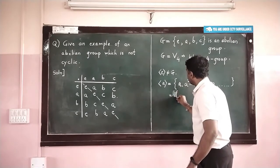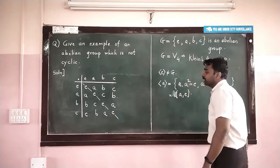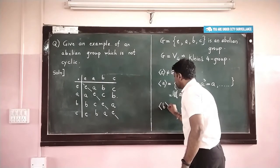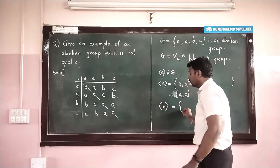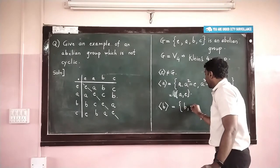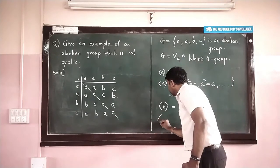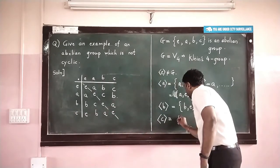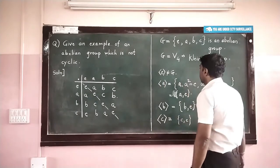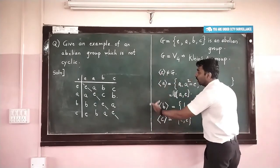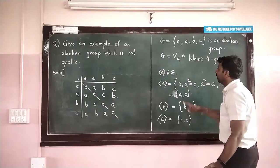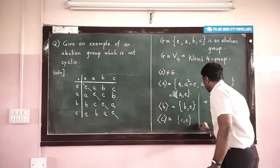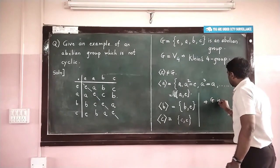Those two elements are A and identity. Similarly, B·B is also identity, so the cyclic subgroup generated by B also contains only two elements: B and identity. Likewise, C·C is also identity, so the cyclic subgroup generated by C is {C, identity}. This means none of the four elements — identity, A, B, or C — can generate the entire group G. Therefore G is not a cyclic group.